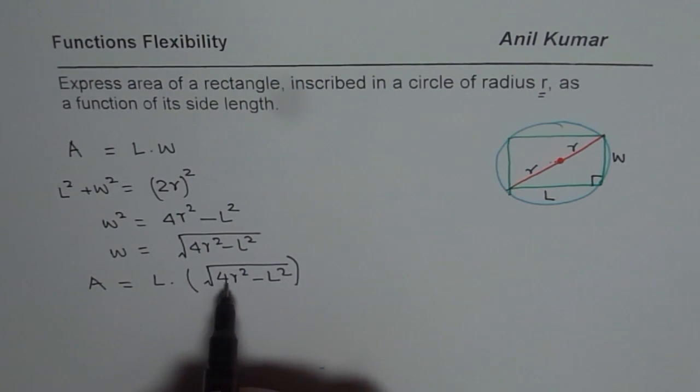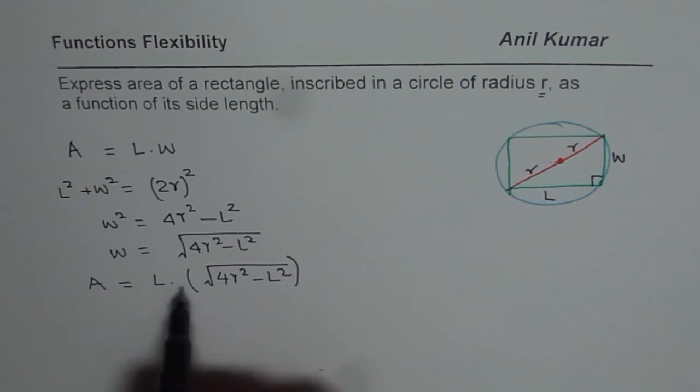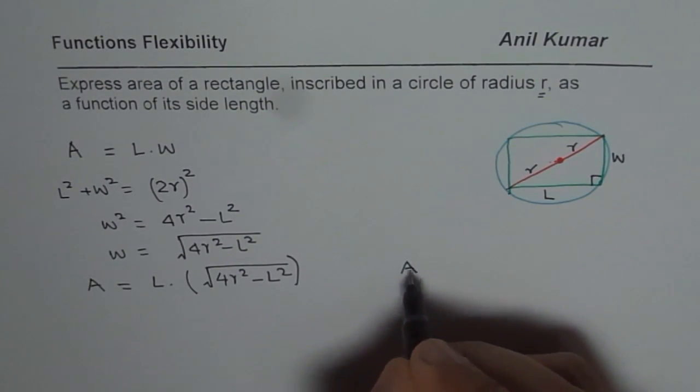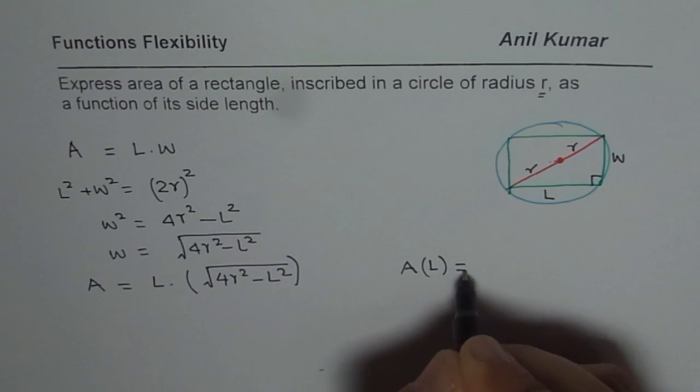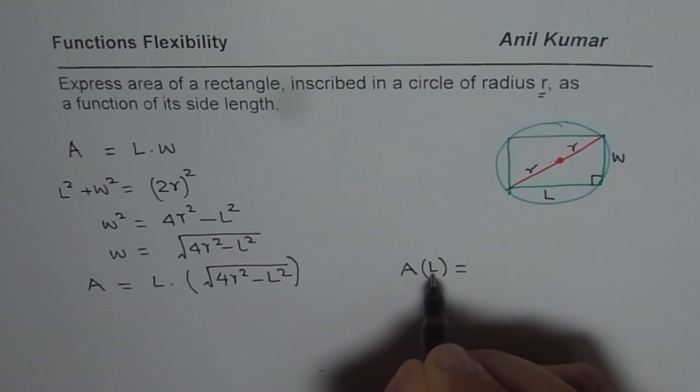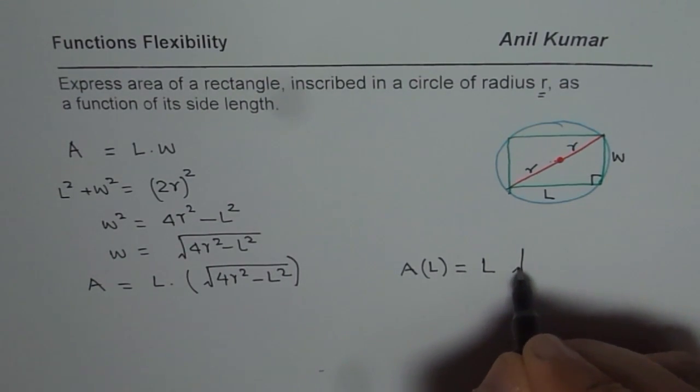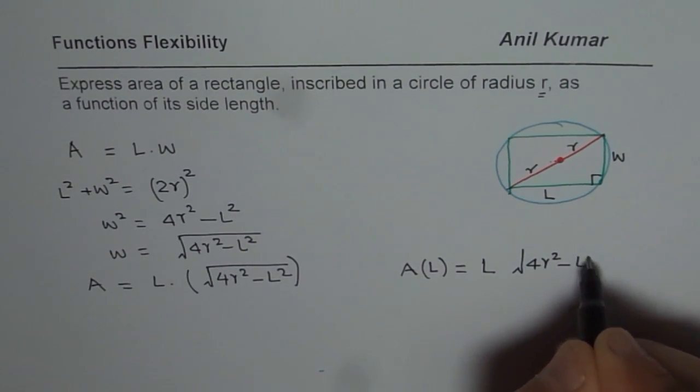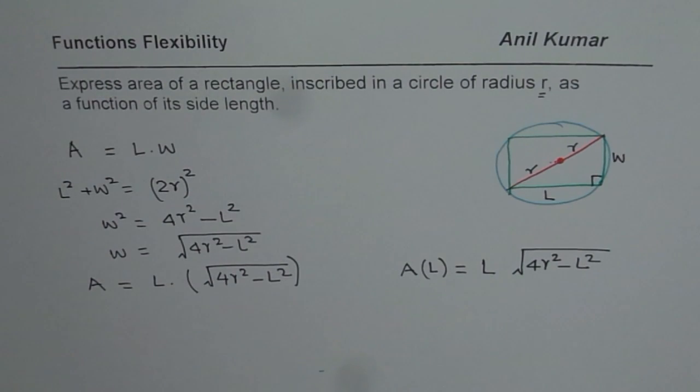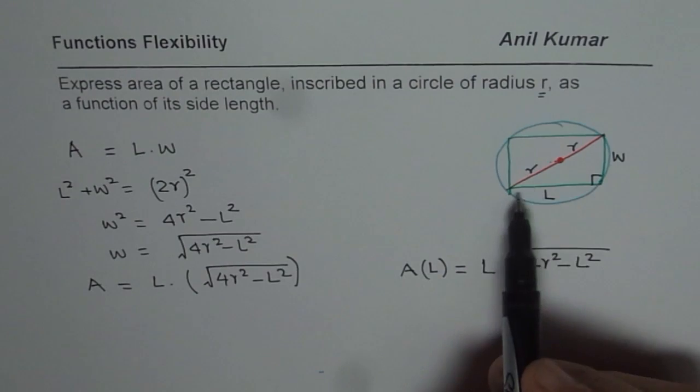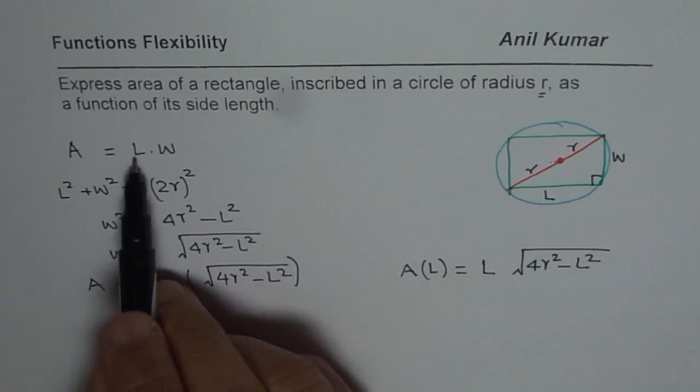That is 4 is a constant. R is known. It is a constant. So the only variable here is length of a rectangle. So we could write this formula as area. Let me write it down here now to remember. Area as a function of length L could be written as L times square root of 4r square minus L square. So that is how you can write a function which is area in terms of just one variable not two.